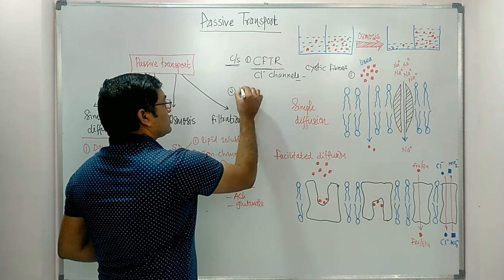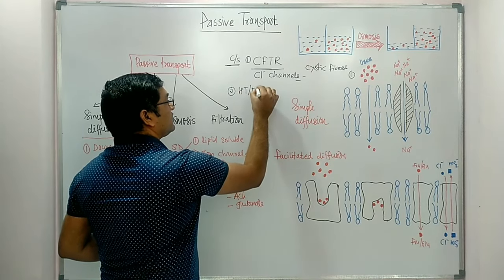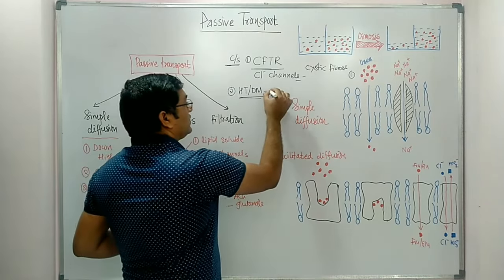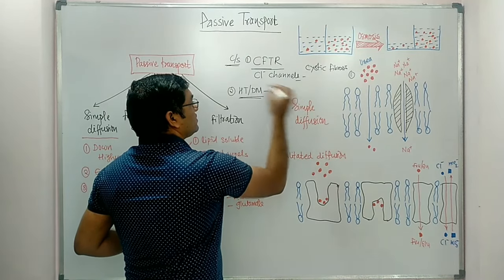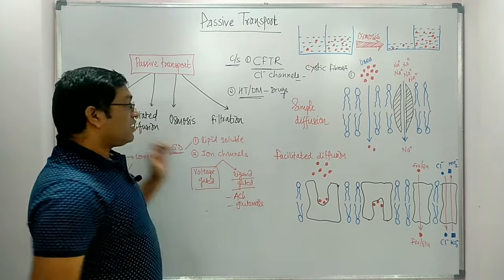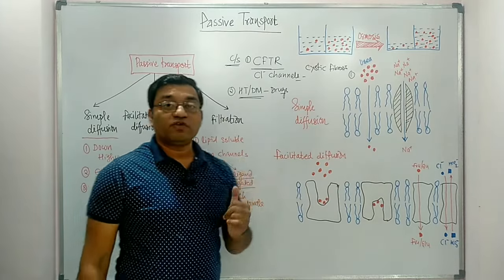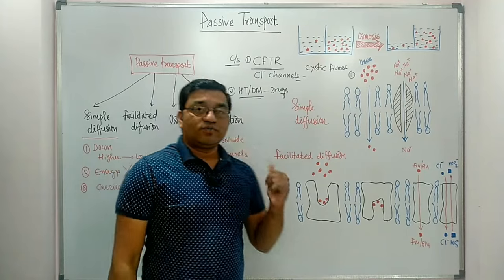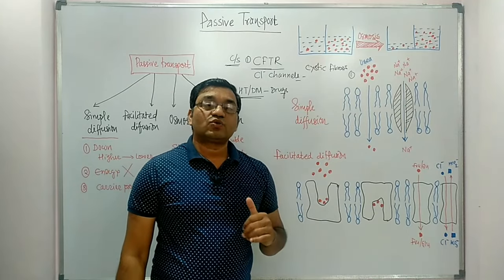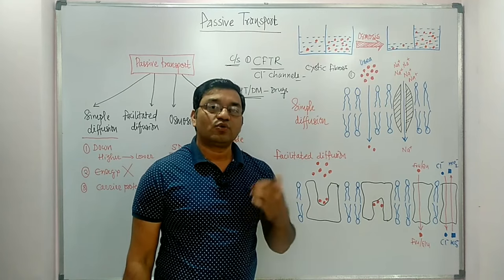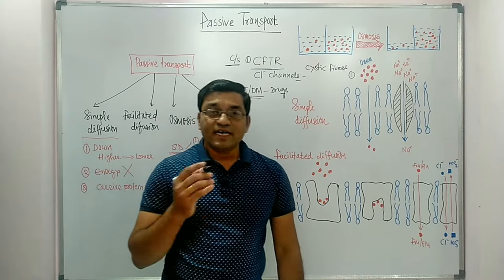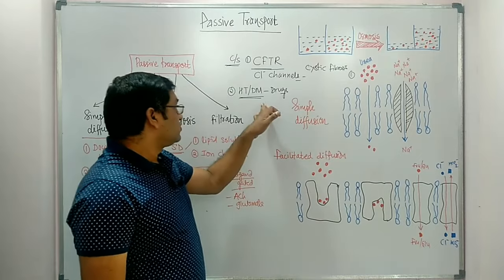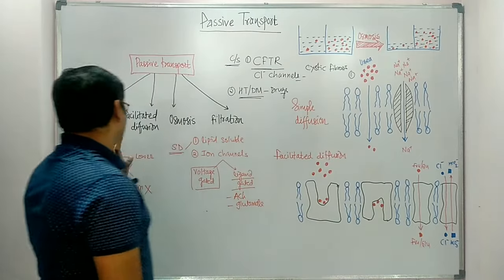The second clinical significance is that various drugs used in the treatment of hypertension and diabetes mellitus affect Ion Channels. For example, Sulfonylureas are oral anti-diabetic drugs used in the treatment of diabetes. They cause closure of potassium channels, which is responsible for the release of insulin from the islets of Langerhans of the pancreas. These are the two clinical significances related to Simple Diffusion.